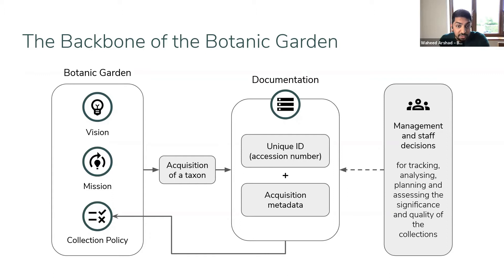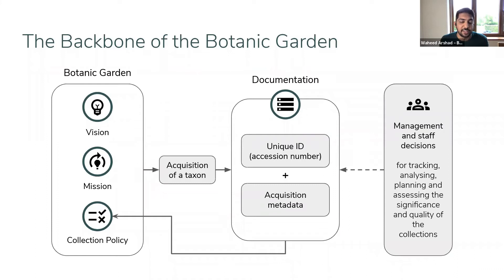No matter how accurate and noteworthy the data might be, it's quite ineffective unless there is a structure and backbone to it. The plant records are central to tracking, analyzing, planning, and assessing the significance and quality of the collection. Keeping information up to date and accurate requires a lot of thought-out prioritization, foresight, and in-depth knowledge of how your institution works. All industries are becoming very data-driven now, and plant records must be kept accurate, up to date, orderly, and systematized.